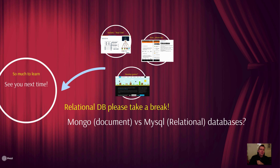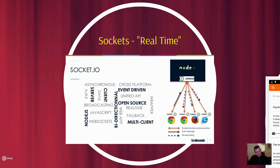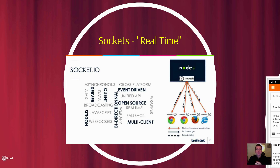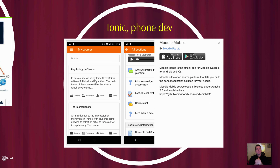Then we have sockets. We're going to try and make some real-time communication on our server — so if I write a message, I want everybody to be notified. That's what real-time socket communication is all about. We're going to use something called Socket.IO to actually do that.